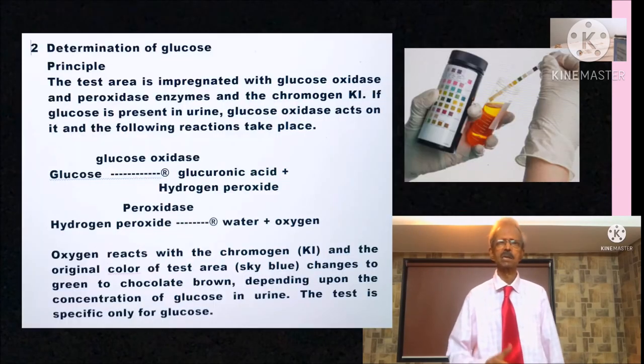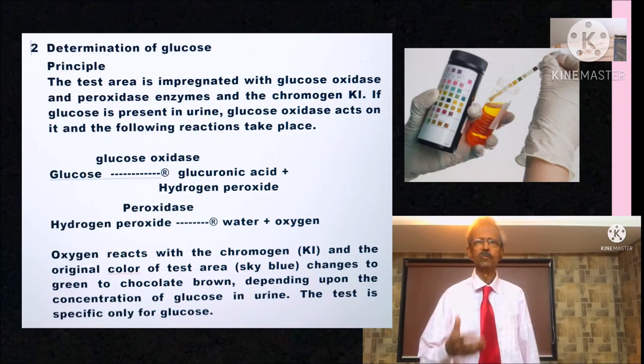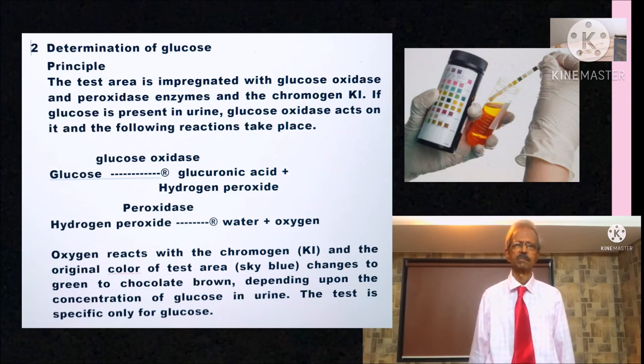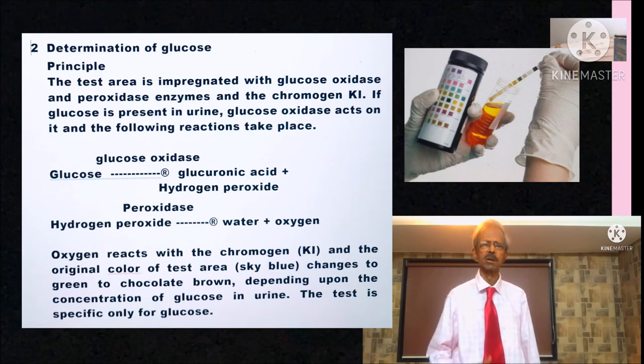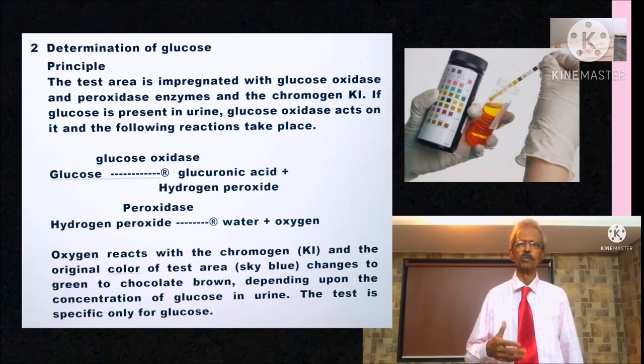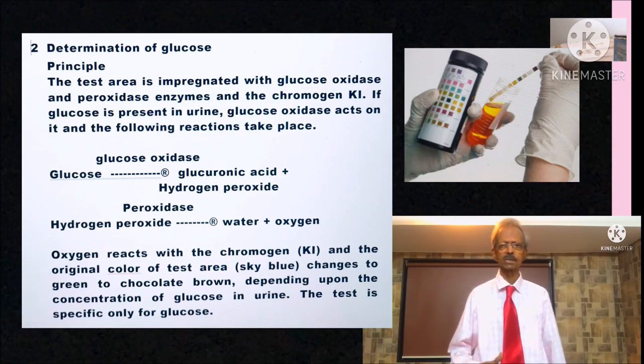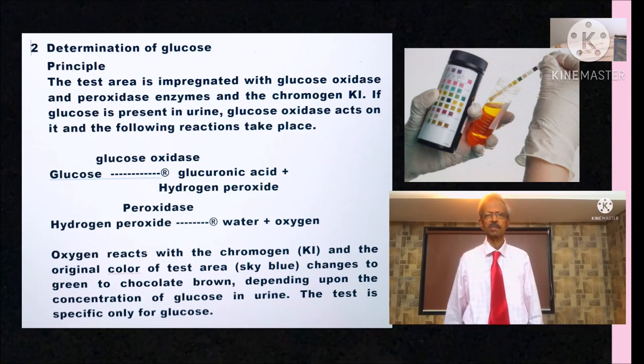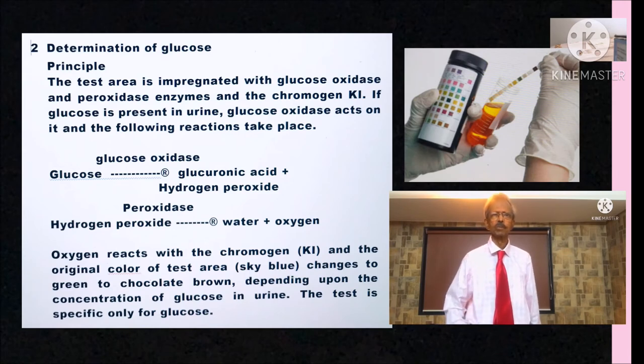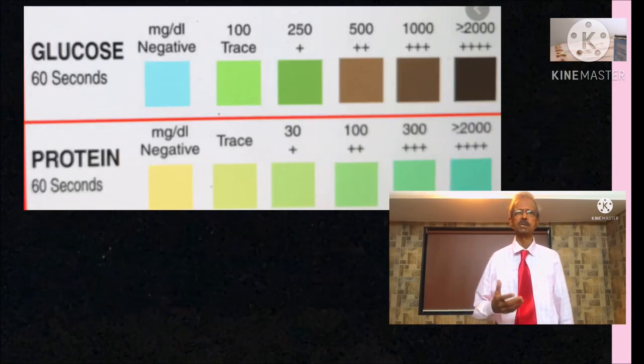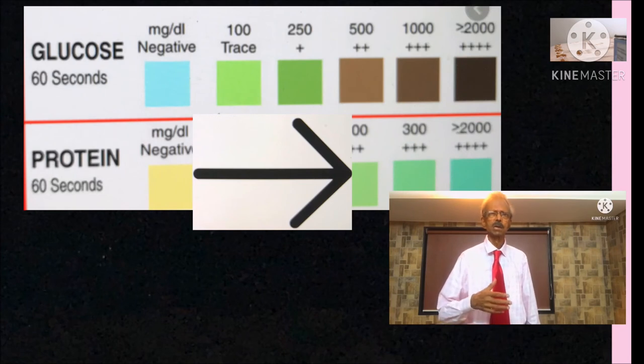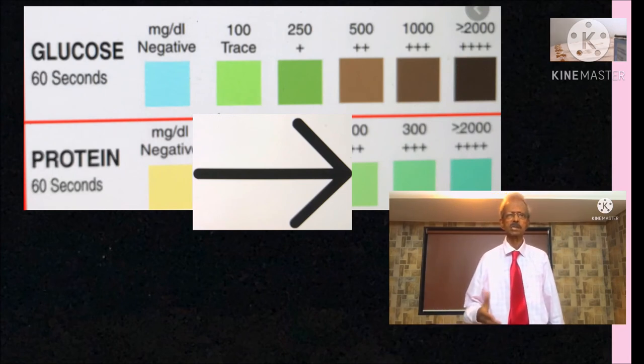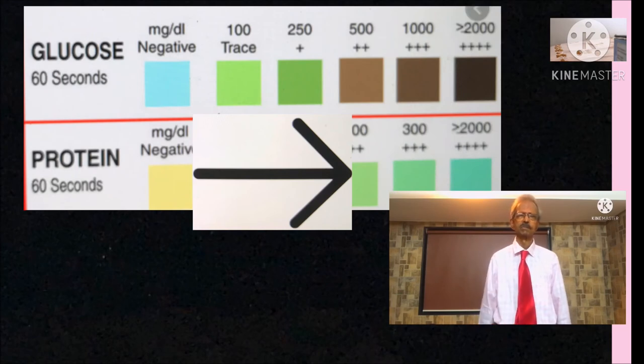Then for the determination of glucose, the test area is impregnated with glucose oxidase, peroxidase and the chromogen potassium iodide. If glucose is present in urine, glucose oxidase acts on it. Glucose is converted to gluconic acid and hydrogen peroxide. Then peroxidase acts on hydrogen peroxide and water molecules and oxygen forms and this oxygen oxidizes potassium iodide, the chromogen and color changes from sky blue to green to chocolate brown depending upon the concentration of glucose in urine. And the method is highly specific only for glucose.